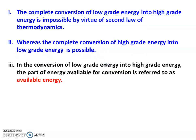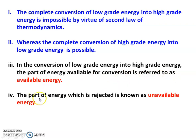An example of complete conversion is an immersion water heater or electrical heater — electric energy (high-grade energy) is convertible into heat at 100% efficiency. In the conversion of low-grade energy into high-grade energy, the part of energy available for conversion is referred to as available energy, and the part of energy which is rejected is known as unavailable energy.